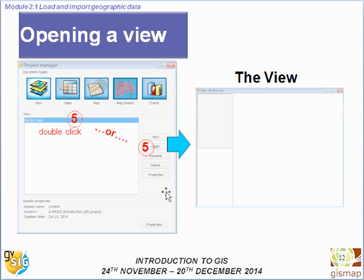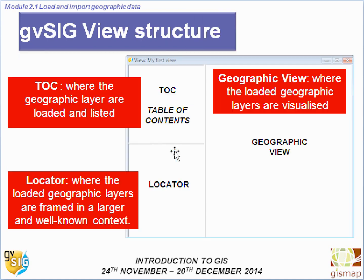Then we can open the view by double-clicking or clicking Open. We have a TOC (Table of Contents) where geographic layers are loaded and listed. We have the geographic view where the loaded layers are visualized, and the locator — which we will speak about — where the loaded geographic layers are framed in a larger, well-known context.